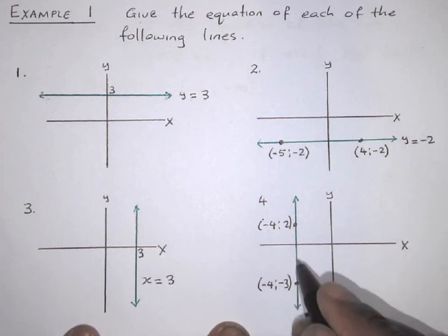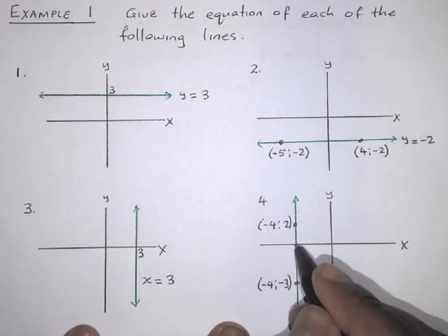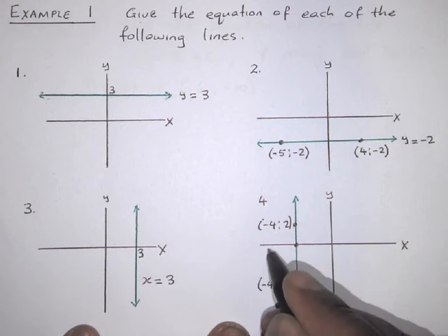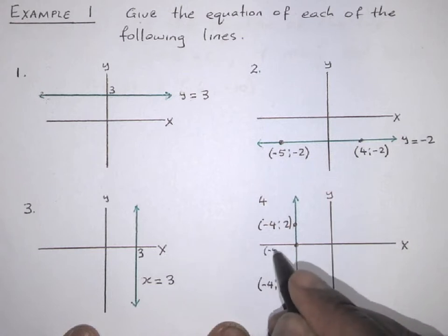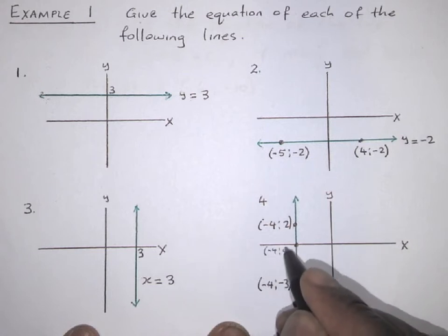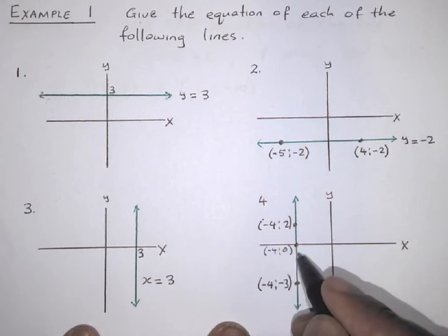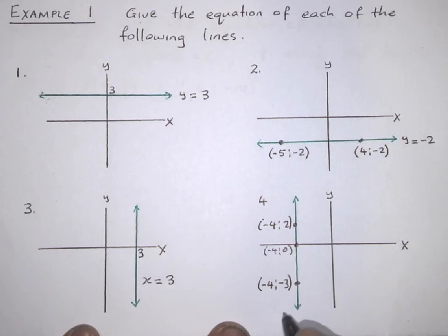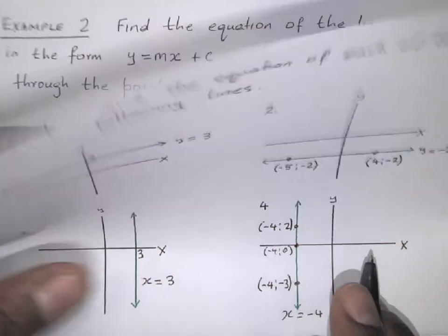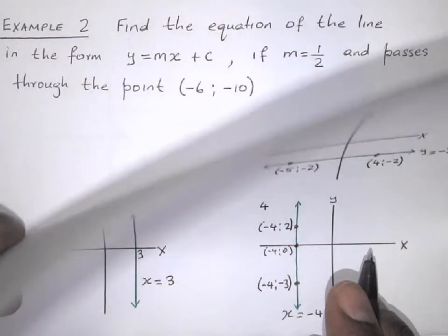So the x-value at this point here will be minus 4. The coordinates here will be minus 4 and 0. So the equation of this line here is x is equal to minus 4.